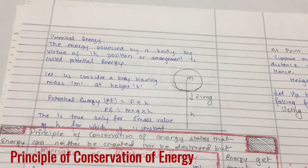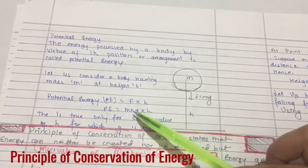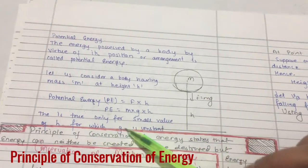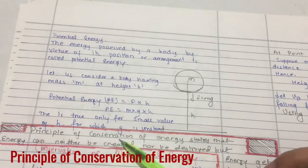At height h, potential energy is simply force into height. So that is force means m into g into h. This is true only for small value of h for which g is always constant.